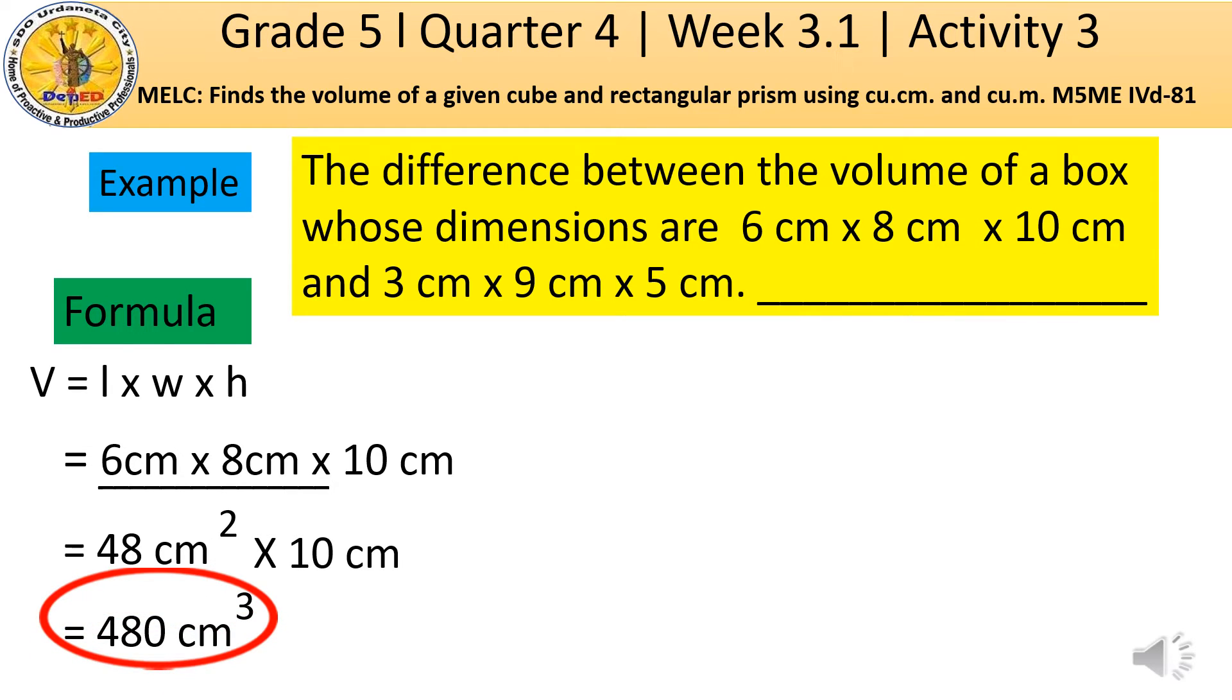Then, let us continue to do the second given in the problem. The formula to be used is volume of a rectangular prism. Volume equals length × width × height. So, the length which is 3 cm will be multiplied first to the width which is 9 cm and the product is 27 cm².